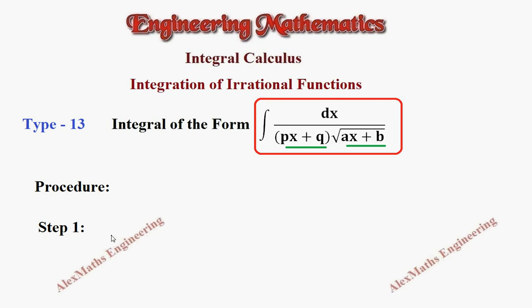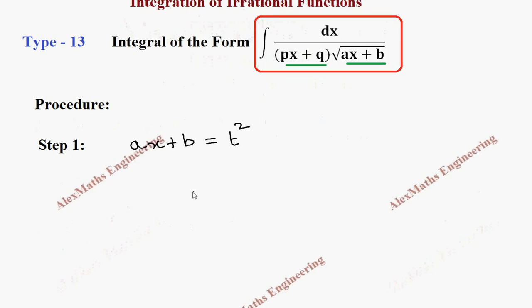As for the procedure, in step 1, we have to take the term inside the square root as t square. Now we have to differentiate this. This will be a dx equal to 2t dt.